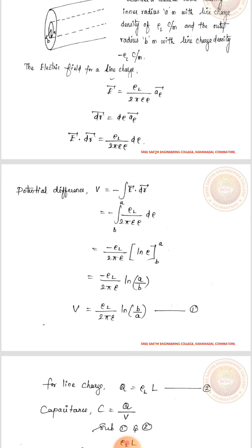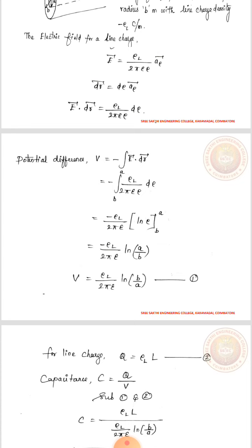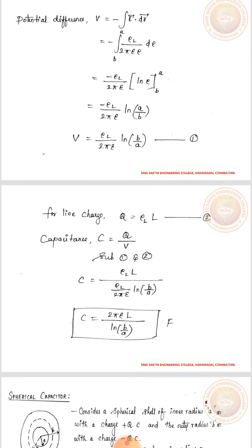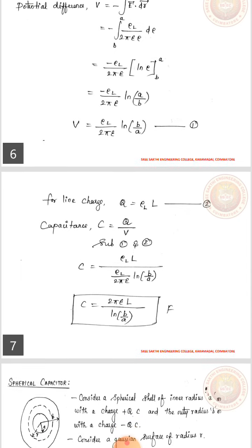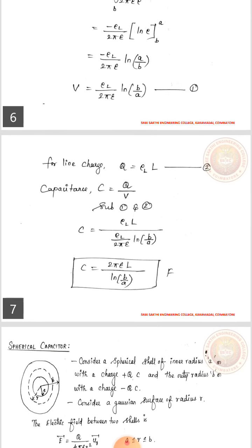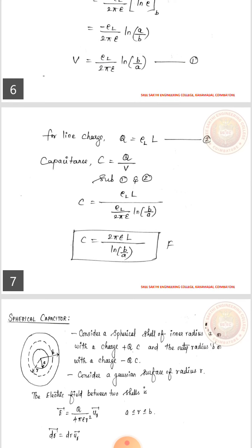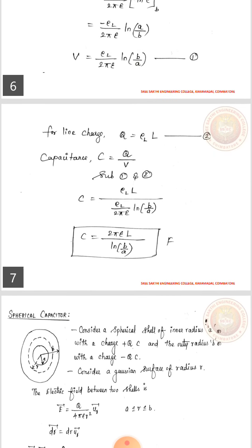This can also be written as V equals rho_l by 2 pi epsilon times ln of b by a. For the total line charge, Q equals rho_l times L. The capacitance is derived by C equals Q by V, where Q is rho_l times L and V is rho_l by 2 pi epsilon times ln of b by a. Cancelling the terms, capacitance equals 2 pi epsilon L by ln of b by a, in farads.